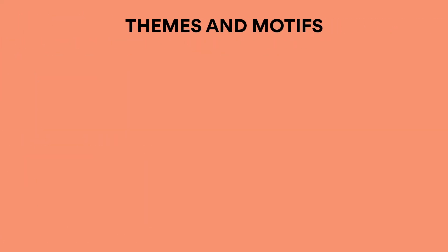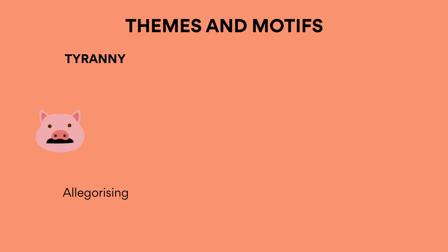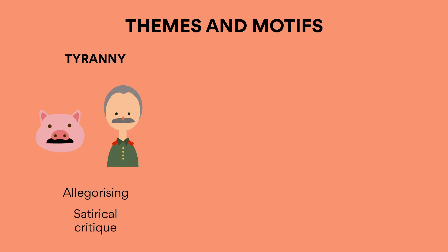Themes and Motifs: Tyranny. By allegorizing Napoleon as a dictator modeled on Joseph Stalin, Animal Farm is first and foremost a satirical critique of politicians' tyrannical misuse of power. This is epitomized by the deceitful methods Napoleon uses to gain support, such as lying to the other animals that Snowball is a political traitor in order to banish him from the farm.